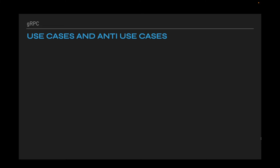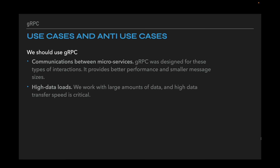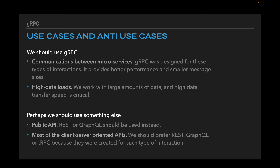Use cases for gRPC: we should use it for communications between microservices — it was designed for these interactions and provides better performance and smaller message sizes. We can also consider gRPC for client-server communication when dealing with high data loads and high transfer speed is critical. Anti-use cases: not for public APIs — REST or GraphQL should be used instead. And for most client-server oriented APIs, gRPC can technically work but was not designed for it, and using it may lead to unpredictable challenges from lack of documentation, community support, to infrastructure problems.